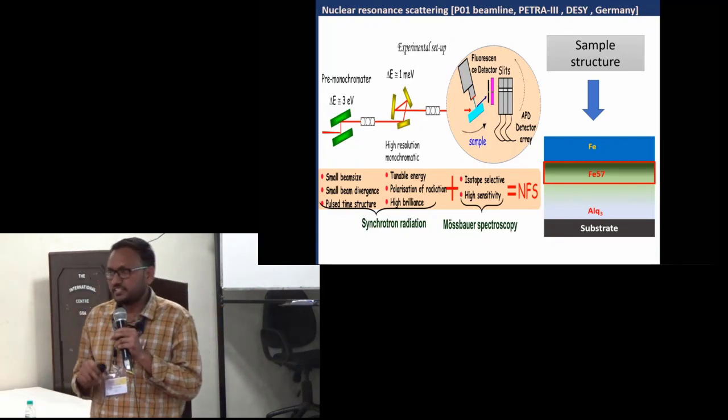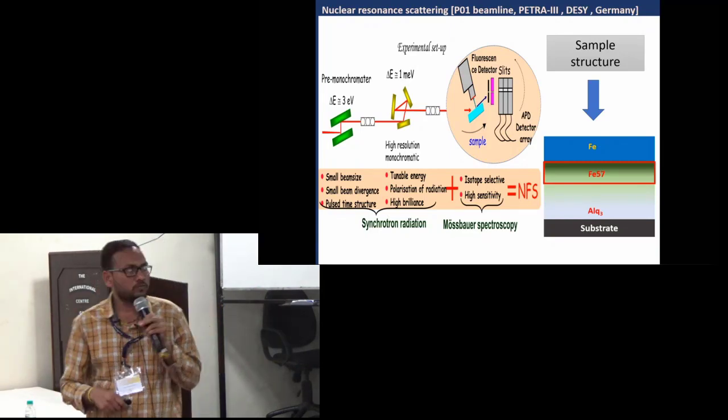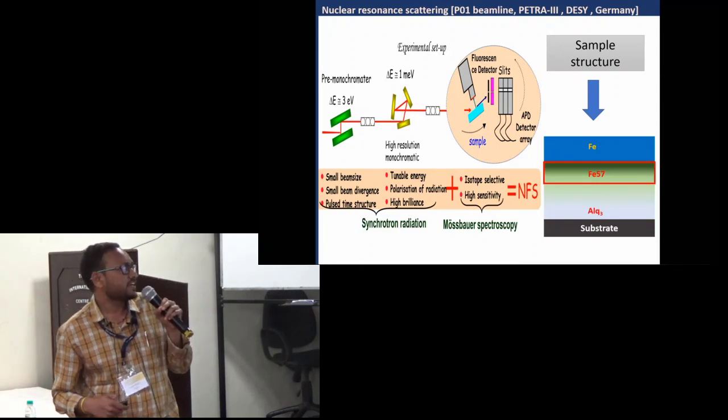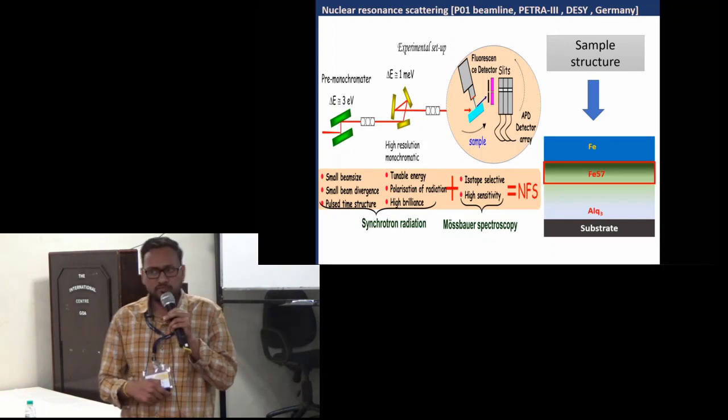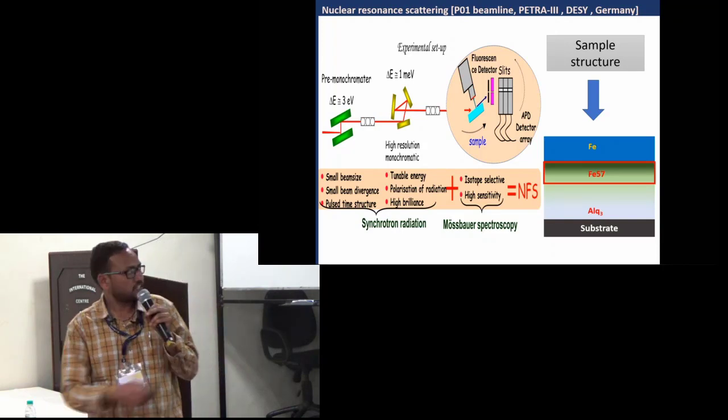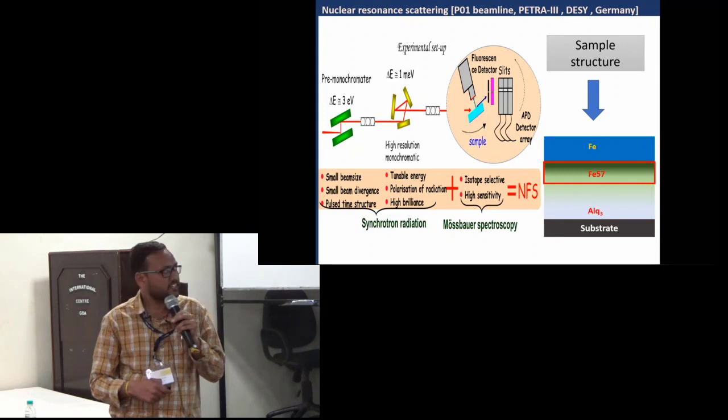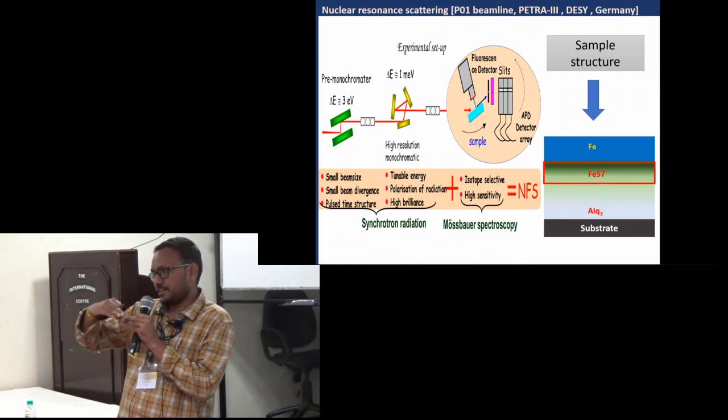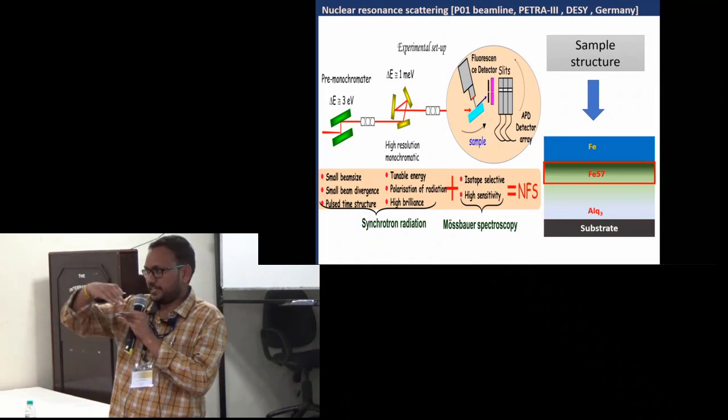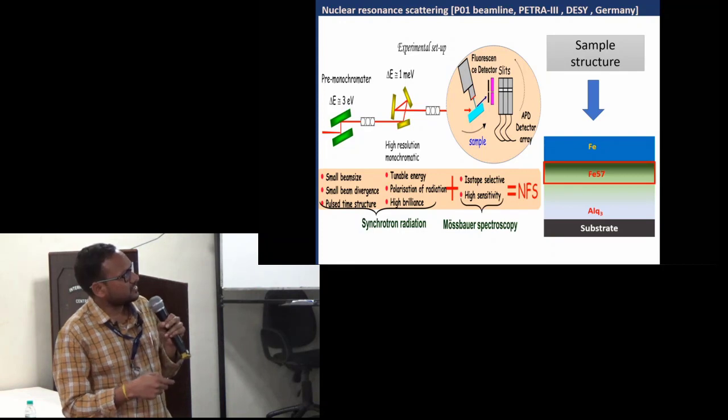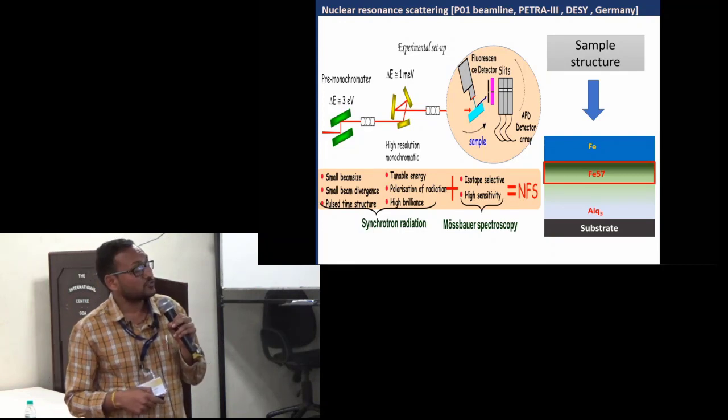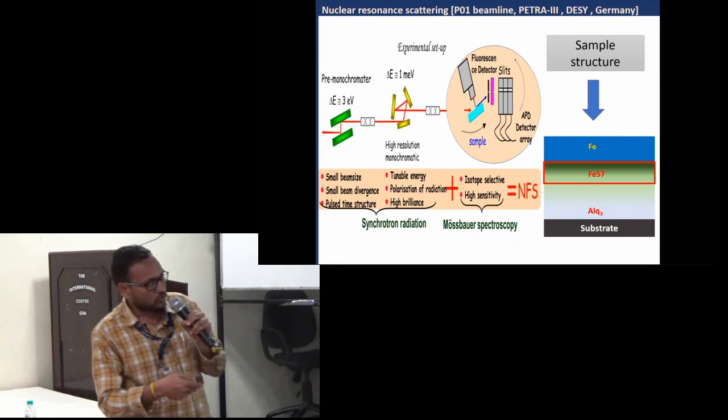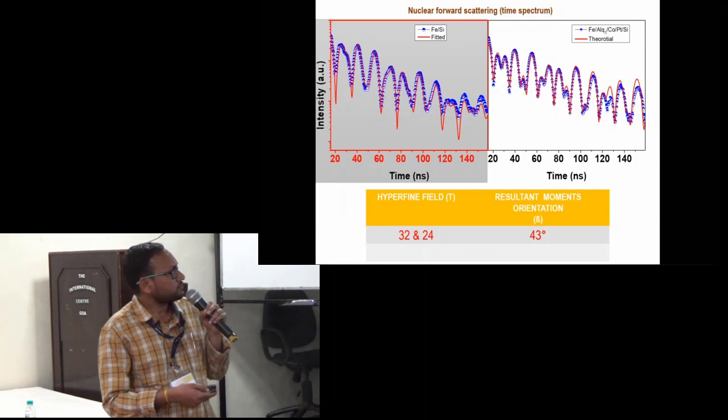In order to further study the interfacial magnetic behavior, we used this technique nuclear resonance scattering available at P01 PETRA-3 DESY. I do not have much time because the first talk of today's lecture already explained this technique very well. In our sample, we just take the probe layer of Fe-57 sandwiched between my polymer and the Fe metals. As NRS is isotope selective, it enabled me to study the interface of metal and organic interfaces.